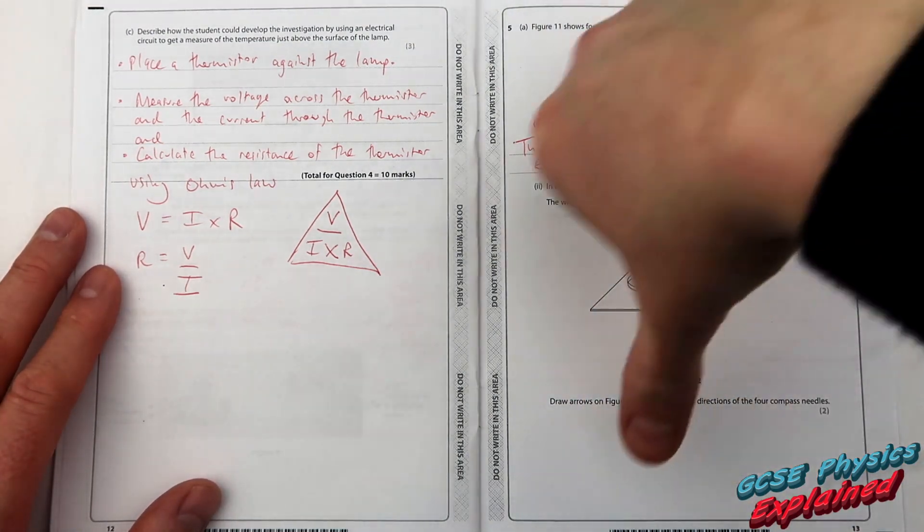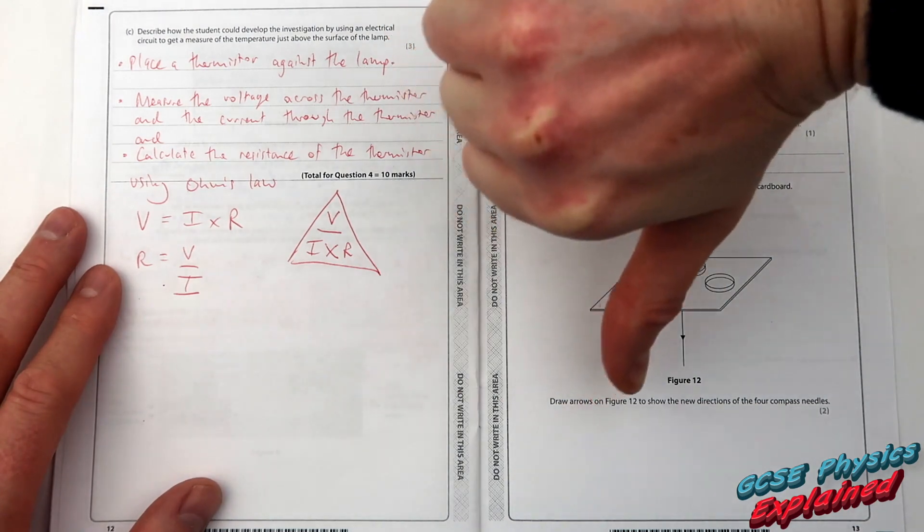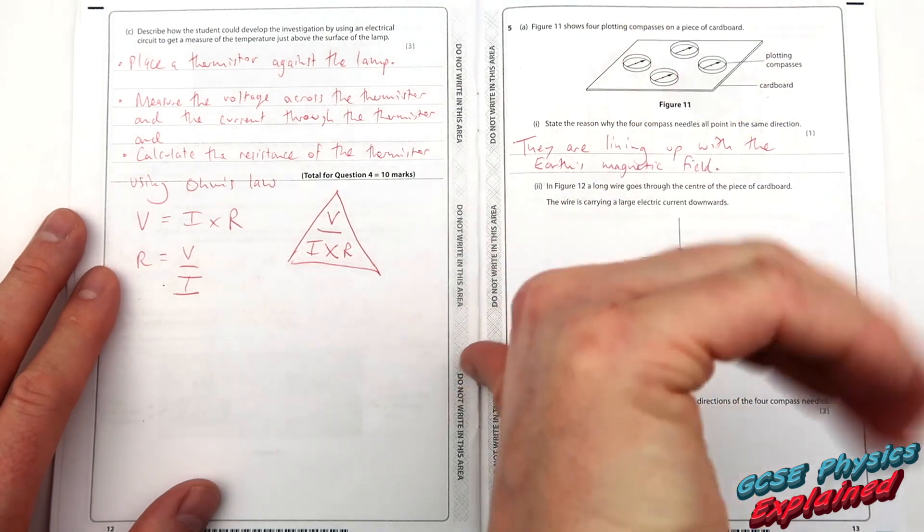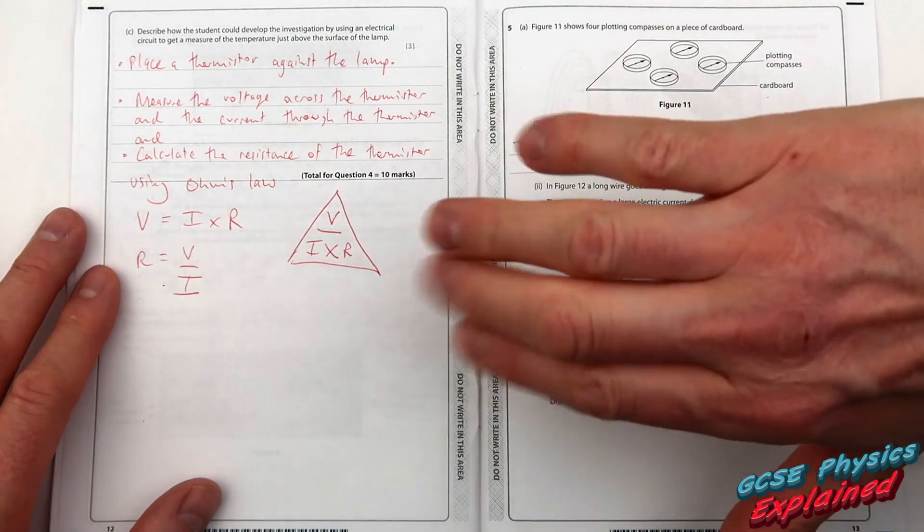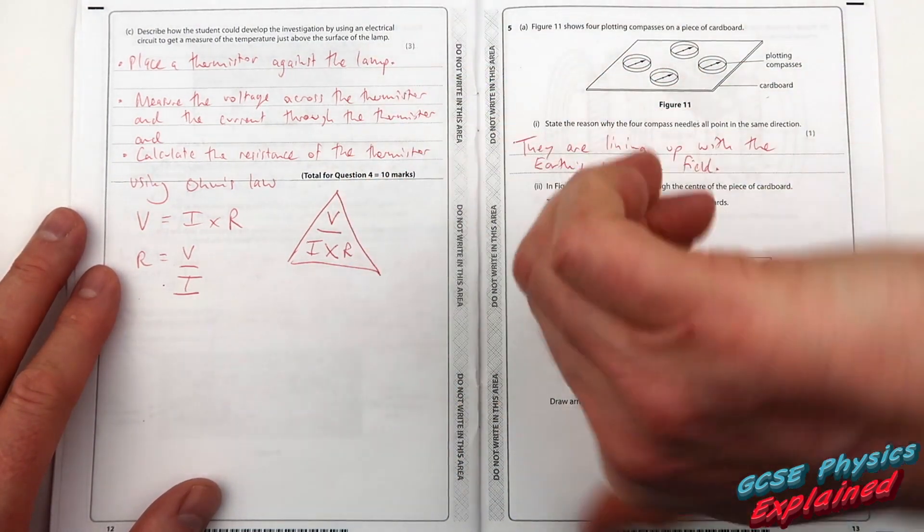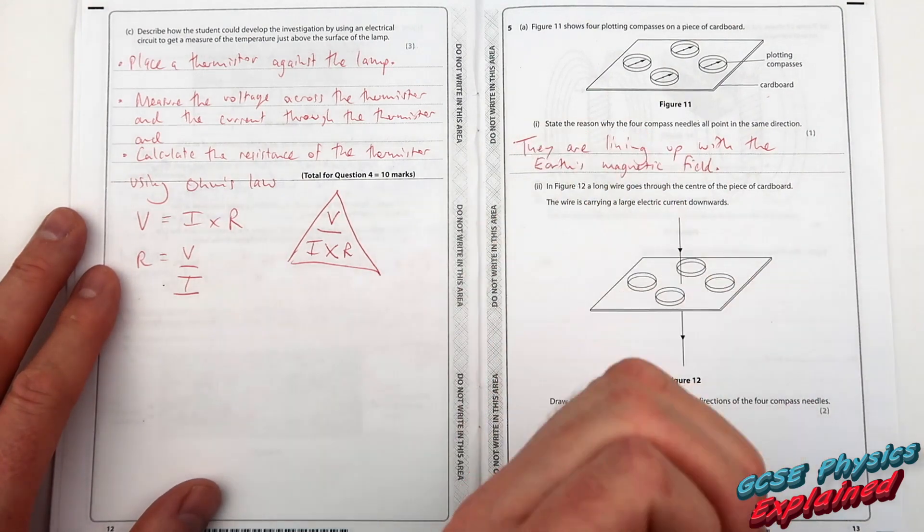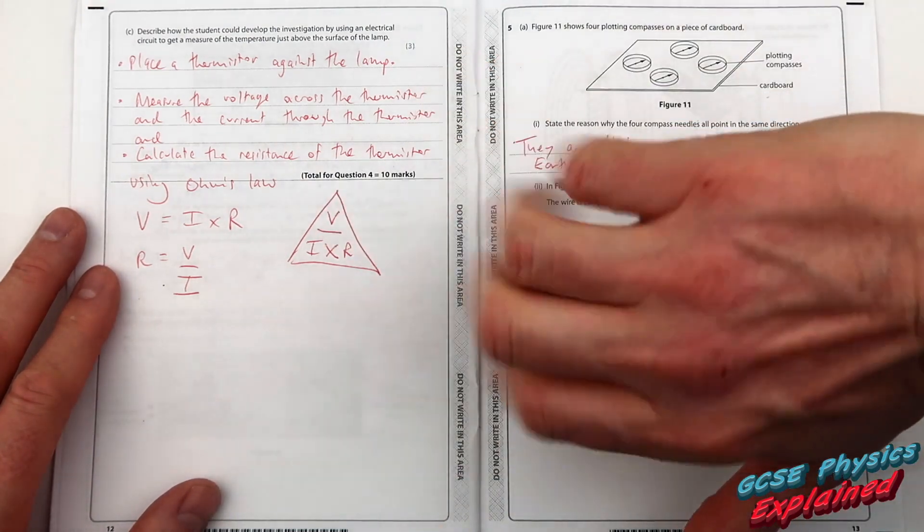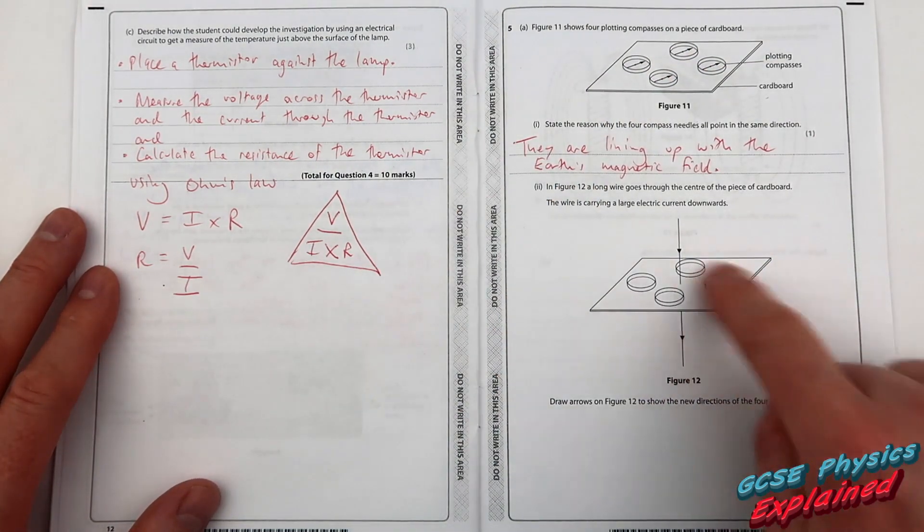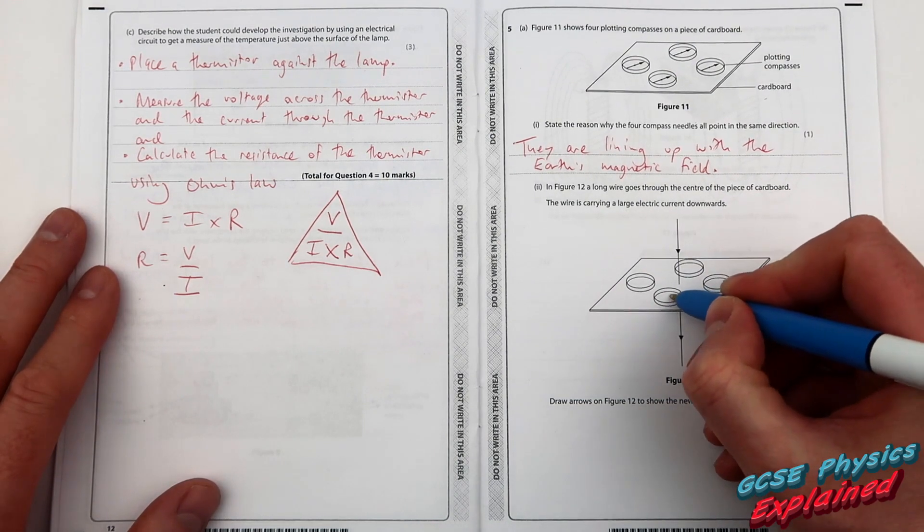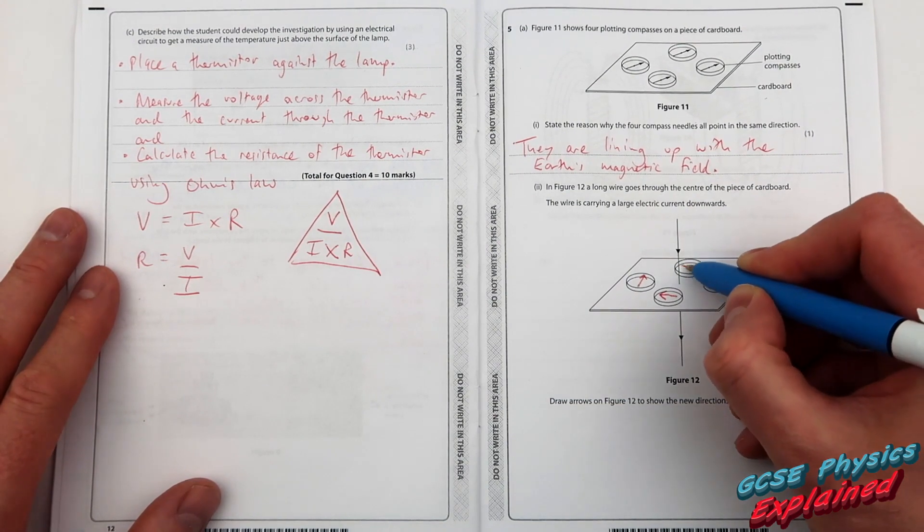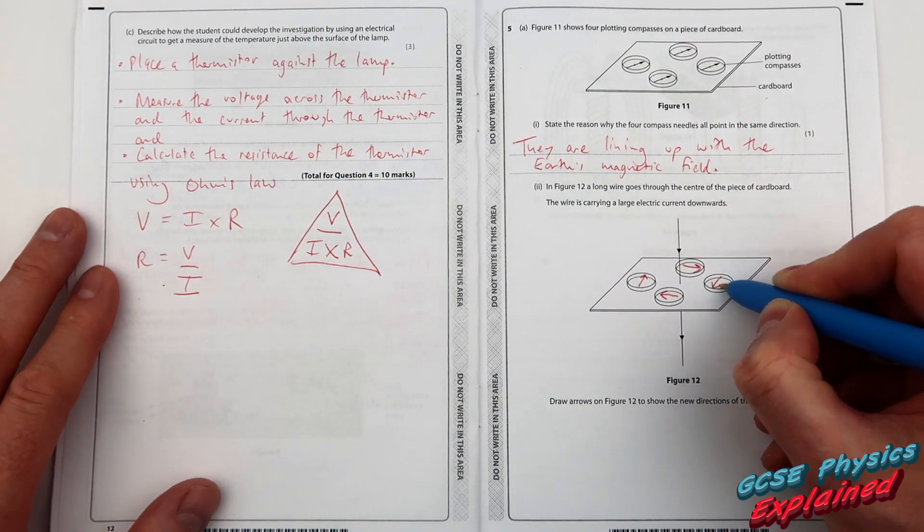Point your thumb which direction that the current is flowing and your fingers show you which way the magnetic field will be. So you can see my fingers are going clockwise. So I need to draw the arrows going clockwise around the wire. So that one will be pointing there. This one will be pointing there. That one will be pointing that way. And that one will be pointing that way.